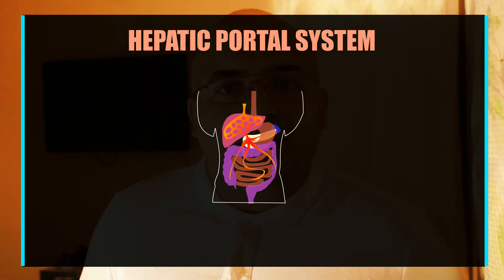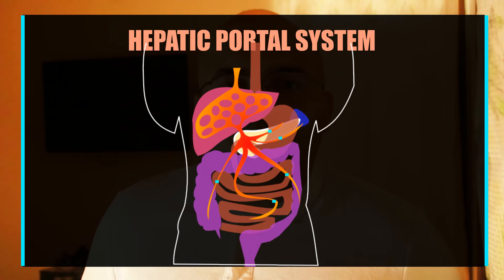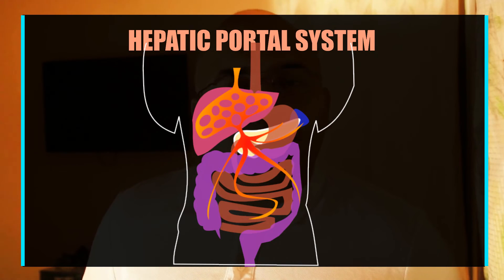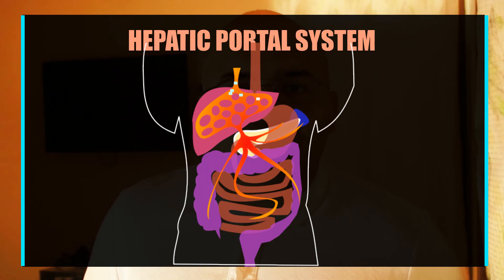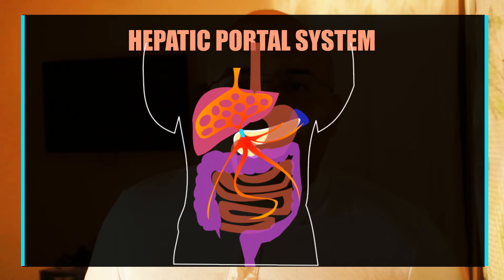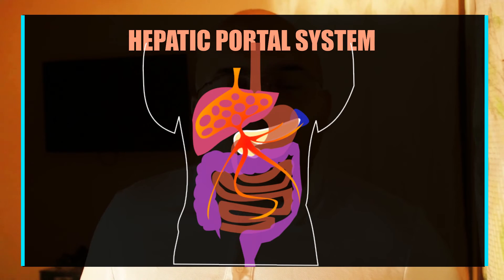The purpose of the hepatic portal system is to transfer all the blood from the abdominal organs to the liver for filtration. The liver has different functions; one of them is filtration — it removes and detoxifies all the toxins present in the blood which have come from absorption from the small intestine. Another function of the liver is to help in the metabolism of carbohydrates, proteins and fats.